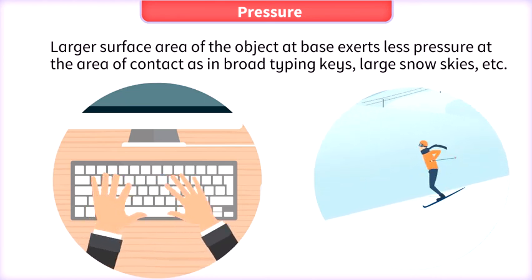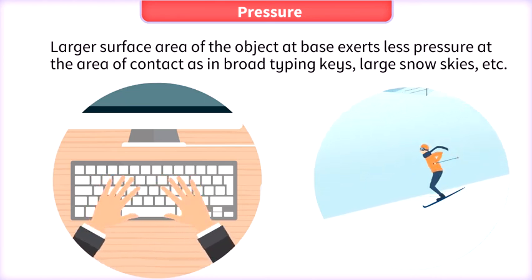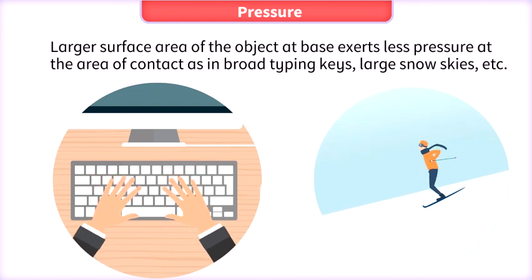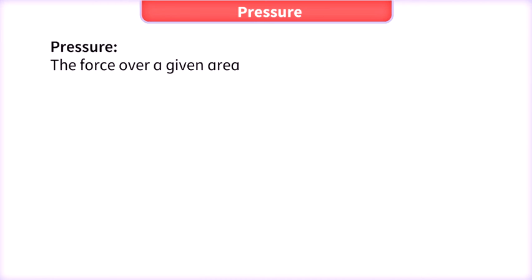Examples of larger surface area resulting in less pressure include broad typing keys, large snow shoes, etc. We can express pressure applied on a given area by an equation.